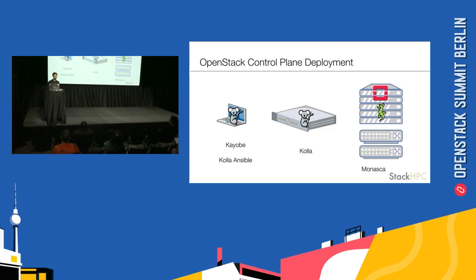At this point, we use Kolla-Ansible to install Kolla on the seed. We build our container images — if you want to build them locally — or you can just pull them down from Docker Hub if you prefer not to. You then install Kolla-Ansible on your laptop, and we use Kolla-Ansible to drive the deployment of the container images into containers on the control plane hosts. This includes Monasca, which provides our monitoring and logging system. Once this is all done, we've got a fully functional OpenStack cloud, but it doesn't really do very much yet.